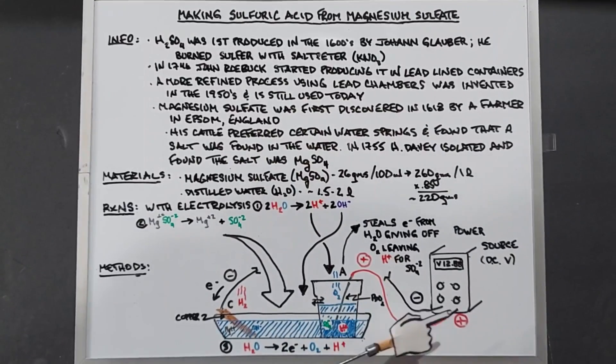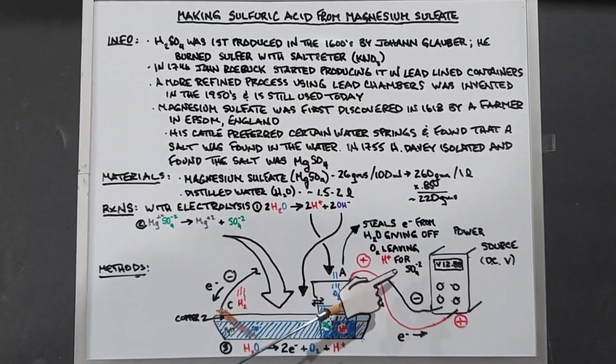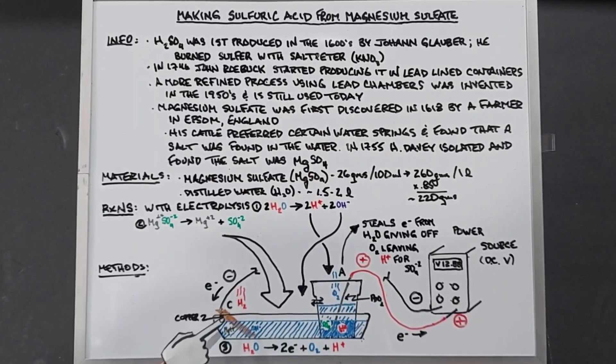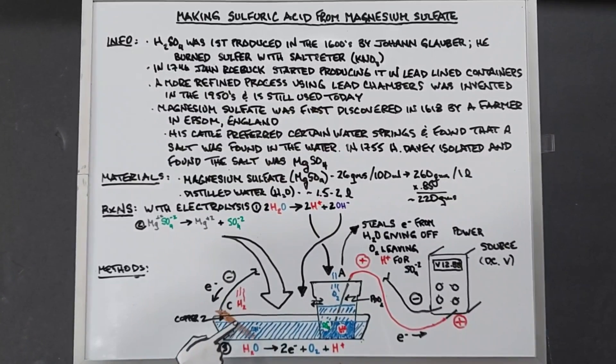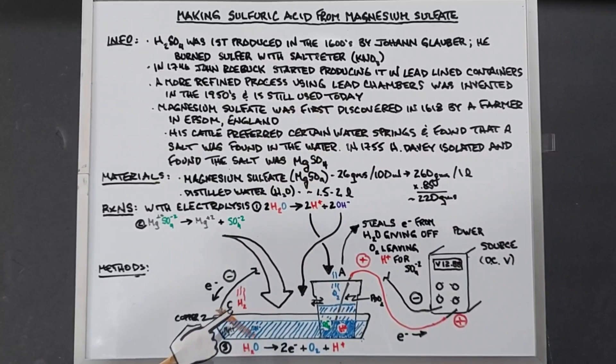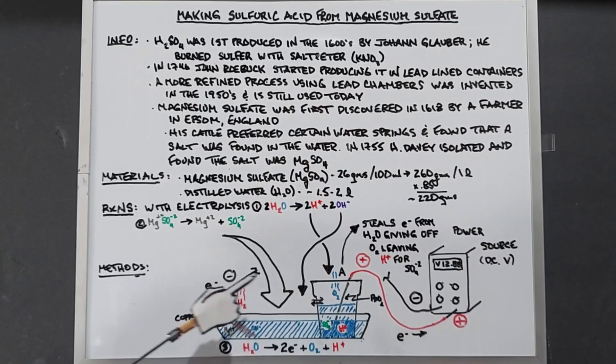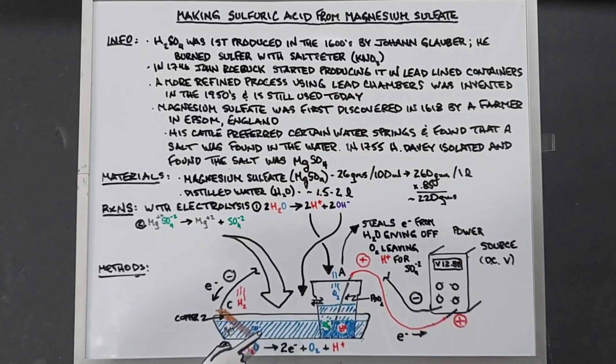The electrons go through the power supply and come out the negative terminal at the cathode, where they're given back to the water. When that happens, hydrogen is released as gas—we'll have hydrogen bubbling here—and it also releases OH- ions. The OH- combines with the magnesium to produce magnesium hydroxide.